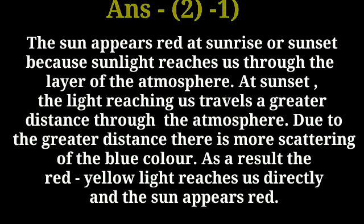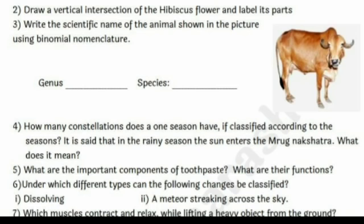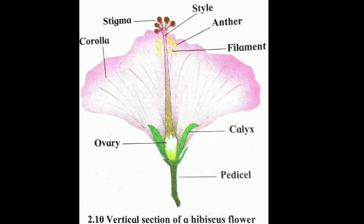Students, write this answer properly. Next question: draw a vertical section of the hibiscus flower and label its parts. You have to draw the diagram first and then give names to all parts of the vertical section of the hibiscus flower. Observe the diagram carefully and draw it with a pencil, labelling all parts.